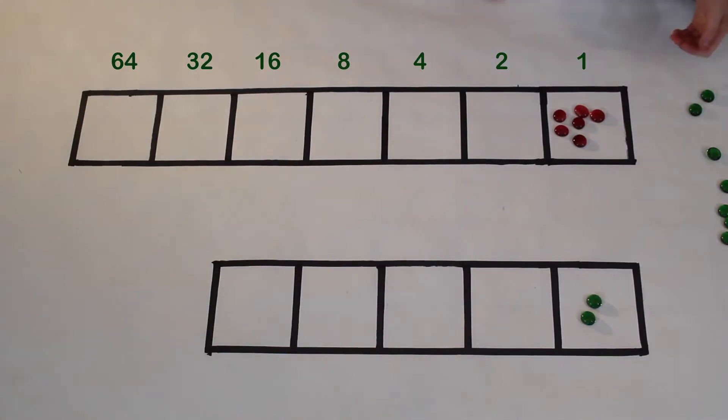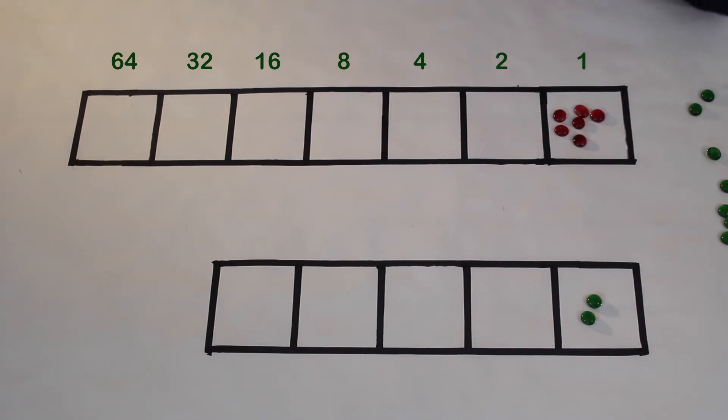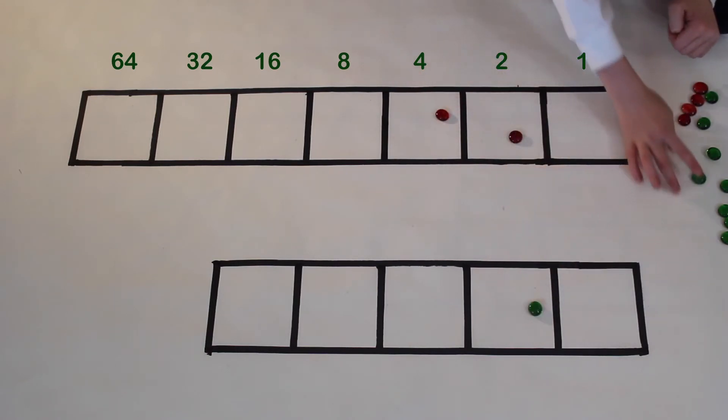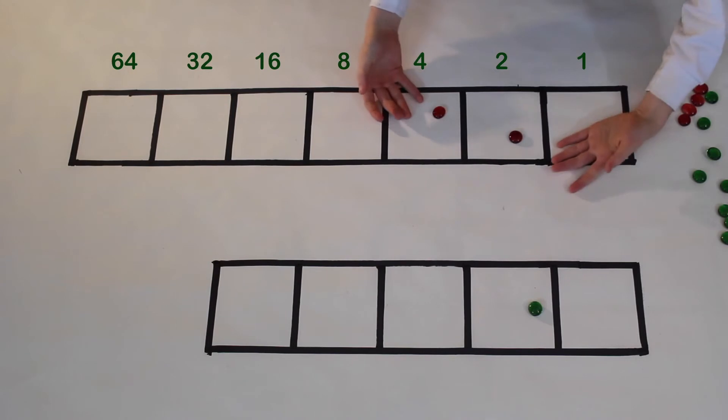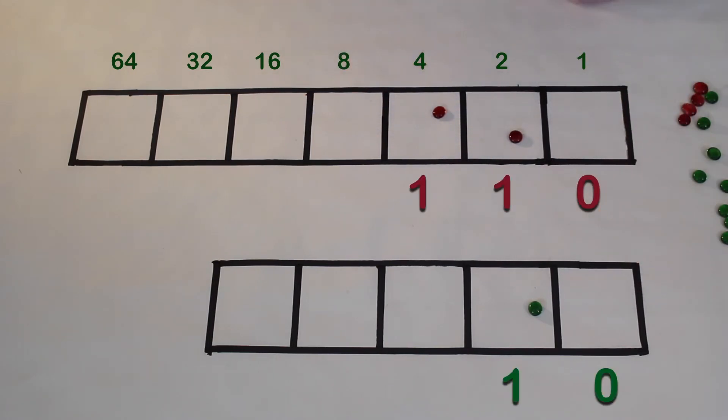Now we're going to be multiplying 6 by 2. We'll make base 2 machines for 6 and for 2. And now we have the base 2 number for 6 and the base 2 number for 2. Now we're going to multiply them the same way we did before.